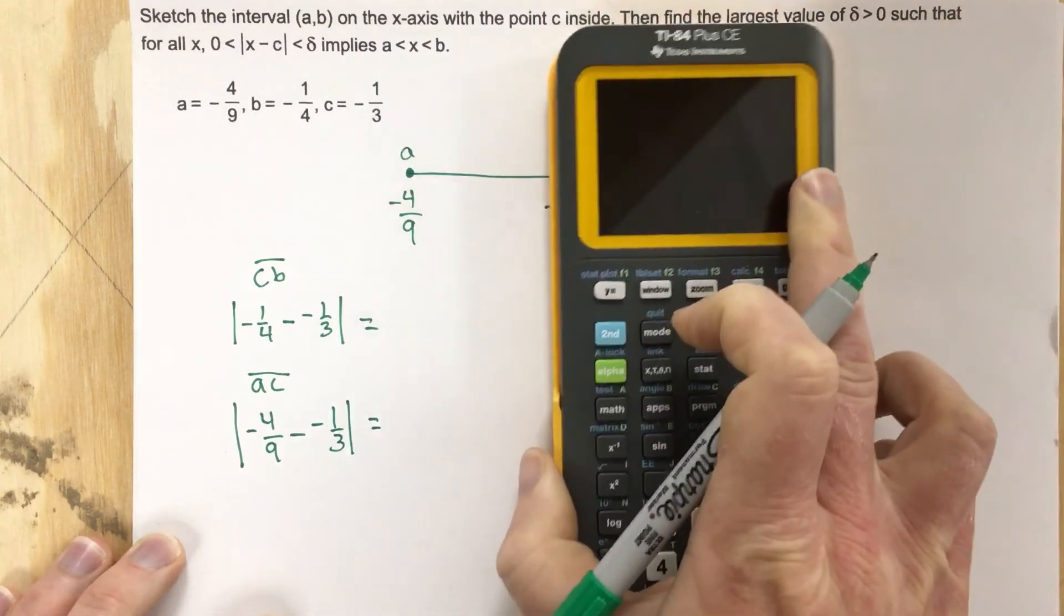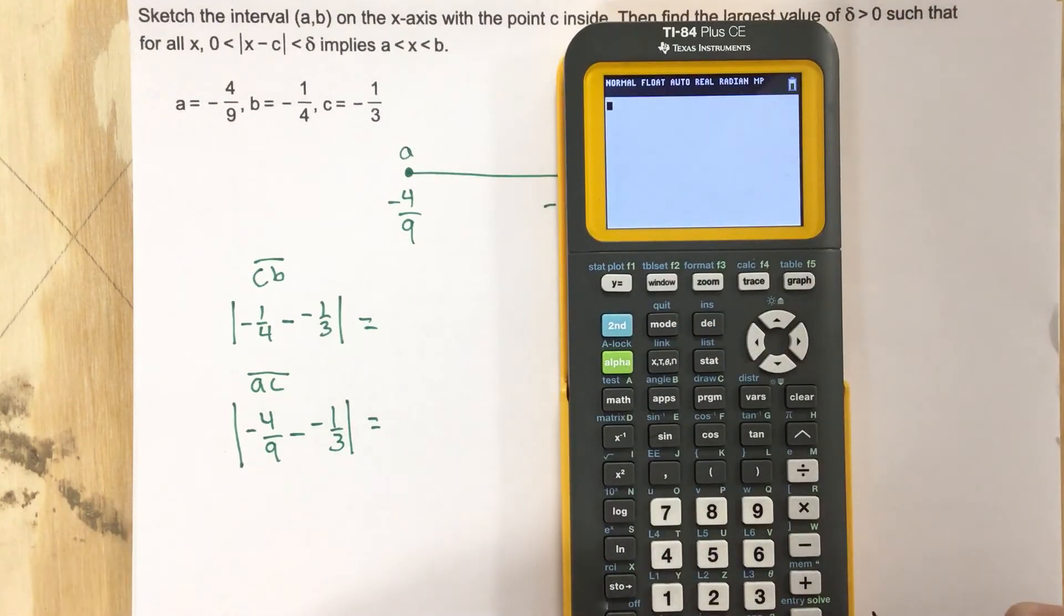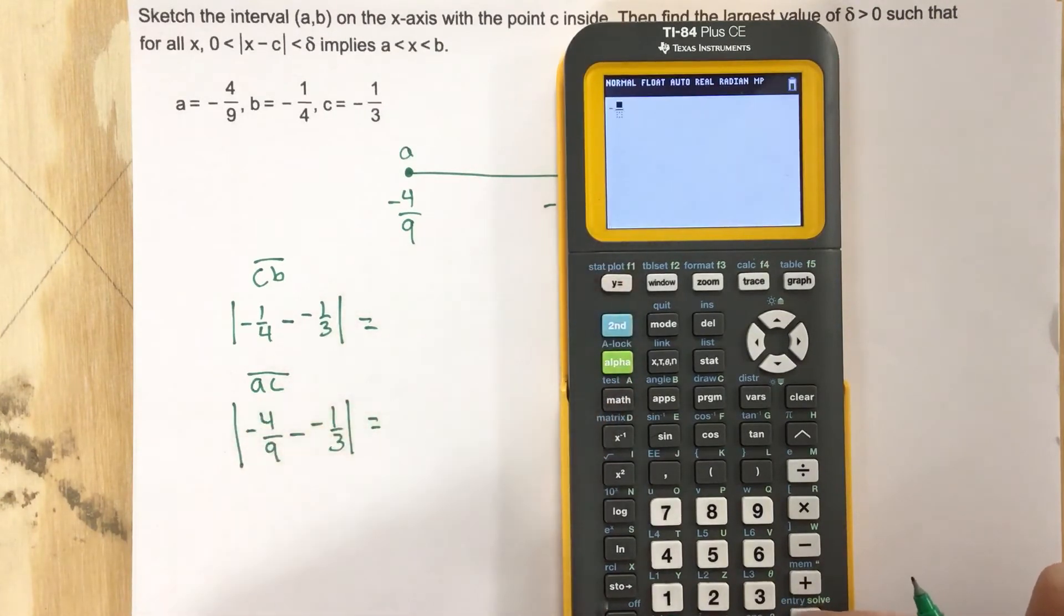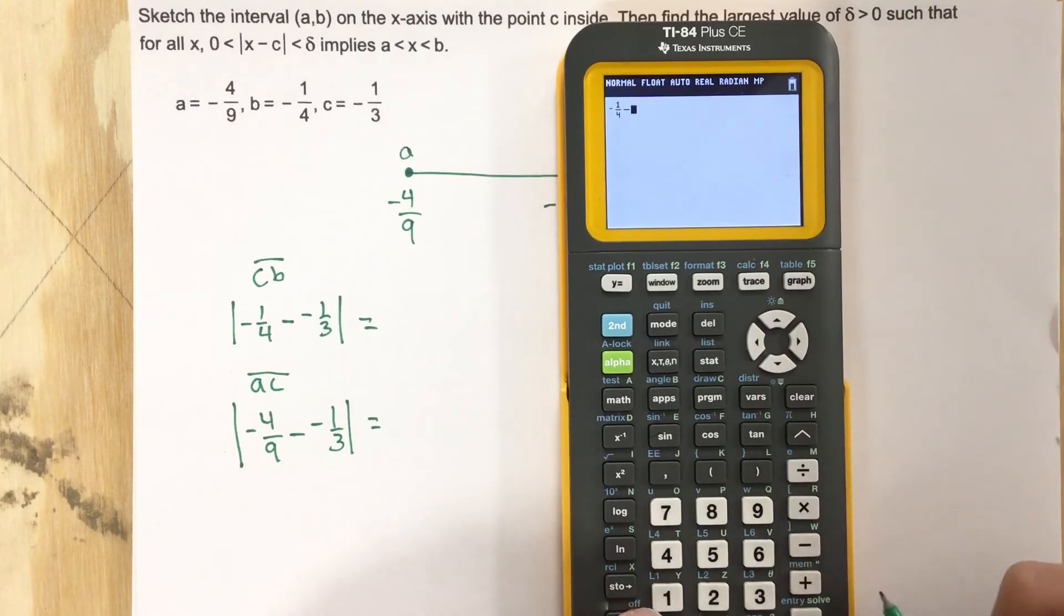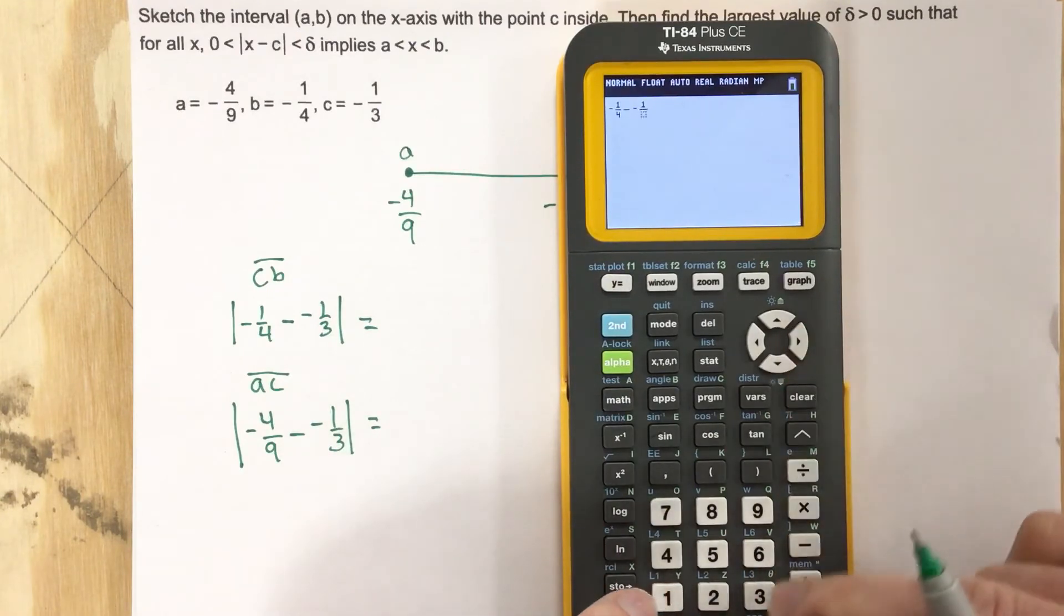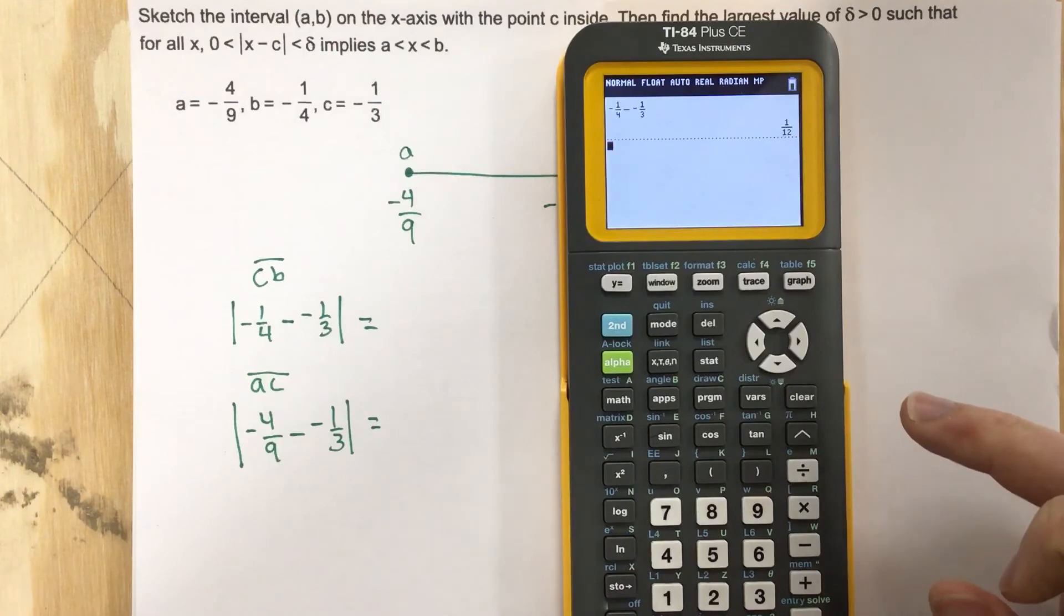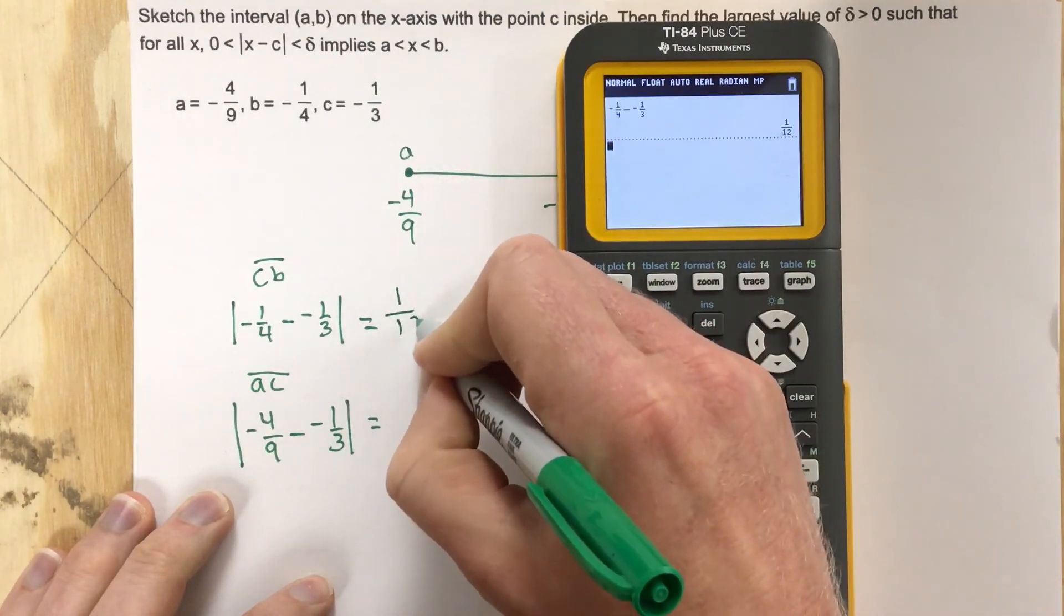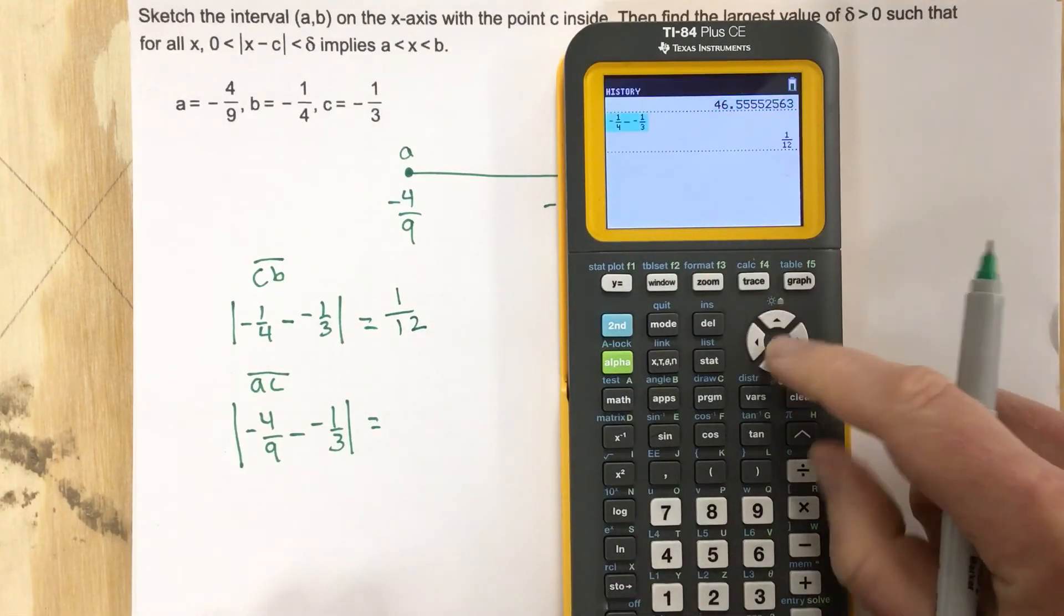Okay, plug those in the calculator, see what we get. So negative, use the fraction button, one over four minus negative one over three. That gives us one twelfth, so this is one over twelve.